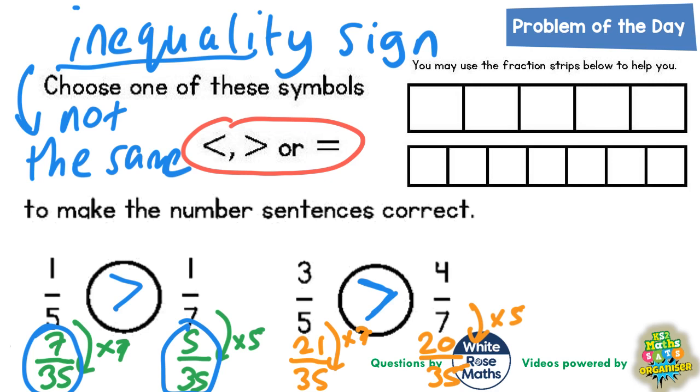Now there was another way that we could have done this. We could have used the fraction strips to help us. Well, 1/5 versus 1/7. 1/5 of the top bar would be 1 out of 5 pieces, and 1/7 of the bottom bar would be 1 out of 7 pieces. You can clearly see that the 1 out of 5 pieces is a bigger piece than the 1 out of 7 pieces.